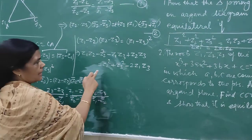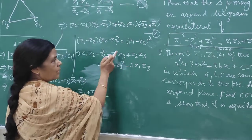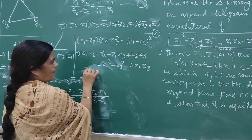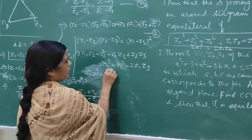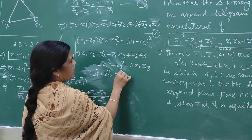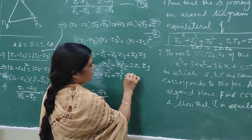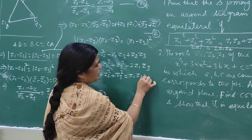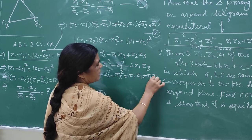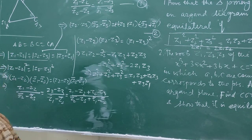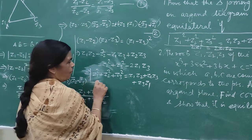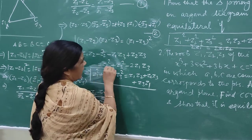Now we move terms from one side to the other. The equation we arrive at is: Z1² plus Z2² plus Z3² equals Z1·Z2 plus Z2·Z3 plus Z3·Z1. So this is the result we have obtained.